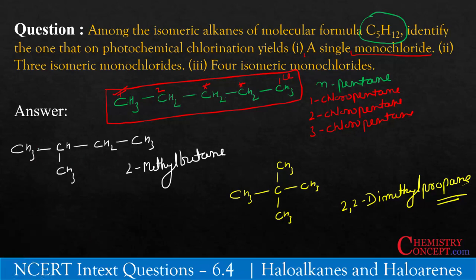In case of this 2-methylbutane, 1, 2, 3, 4 carbons are there. We can put chlorine on carbon number 1, then it will be called 1-chloro-2-methylbutane. We can put chlorine on carbon number 2, and then it will be called 2-chloro-2-methylbutane.